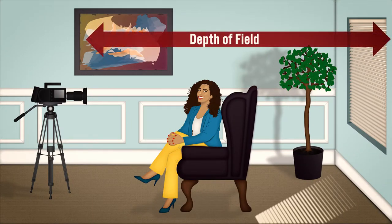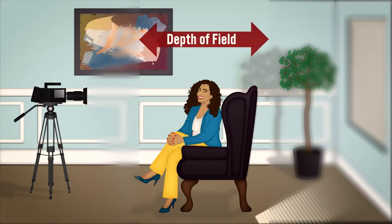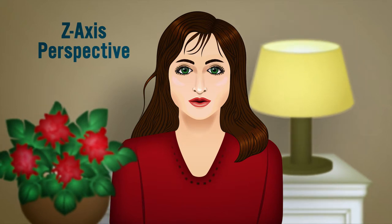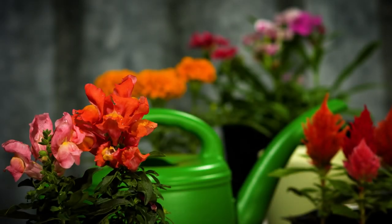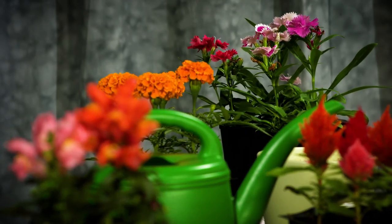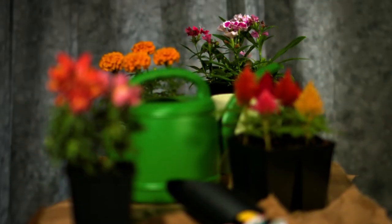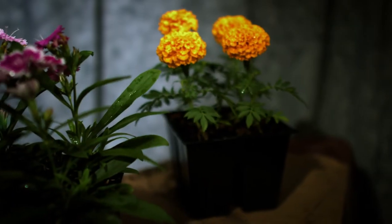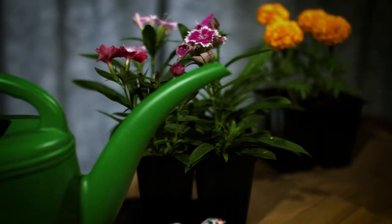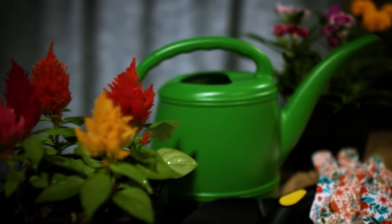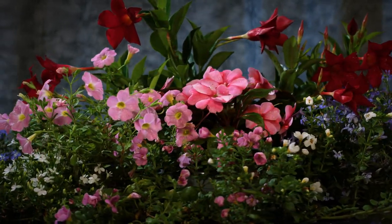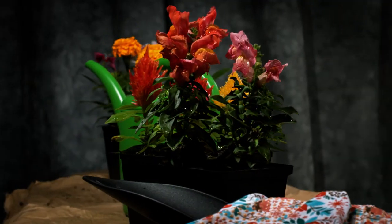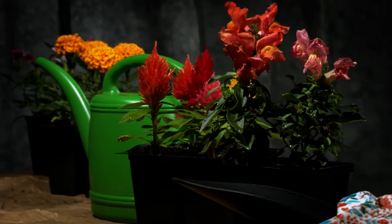By definition, depth of field is the distance between the nearest and furthest points in a video or photo where objects appear to be in focus. Z-axis perspective refers to how the background objects in your image appear relative to the subject and foreground. By controlling these elements, a knowledgeable photographer or videographer can achieve the look and feel they want. Things that are in focus attract the viewer's attention while objects that are out of focus tend to be ignored. Photographers and videographers can use depth of field to draw the viewer's attention to what is important in a scene, obscure distractions, enhance artistic appeal, or help set the mood.